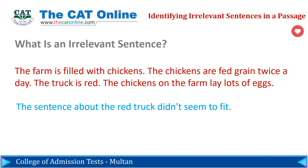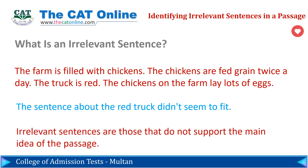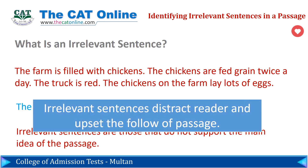Simply stated, it doesn't fit and is not related to the topic of the passage. Irrelevant sentences are those that do not support the main idea of the passage. The red truck sentence did not connect to the main idea of chickens, so it seemed out of place, or irrelevant. Irrelevant sentences distract readers and upset the flow of passages; therefore, they should be avoided.